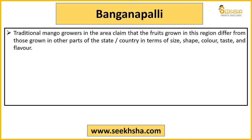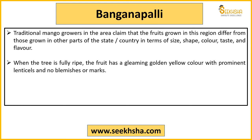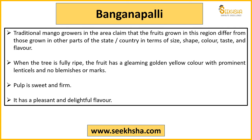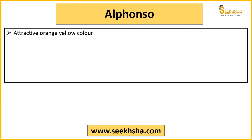Coming to Banganapalli - compared to other mangoes, you will find differences in every aspect: size, shape, color, taste, and flavor. When fully ripened, Banganapalli looks completely golden yellow, just like gold. There are very few spots or marks on it. Its pulp is quite sweet and firm, and the flavor is considered very good. Alphonso has an attractive orange-yellow color - a mix of orange and yellow.